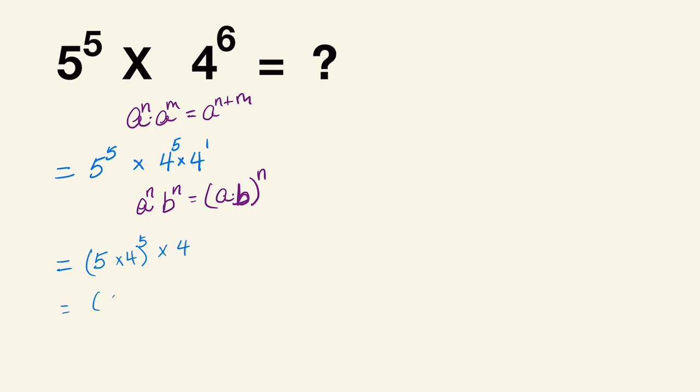This is going to equal 20 raised to the 5, and we're going to rewrite 4 to be 2 squared. This is now equal to 20, which is 2 times 10, raised to the 5, times 2 squared. I'm going to rewrite this over here.